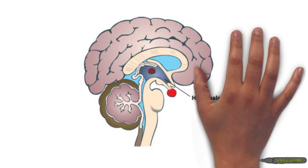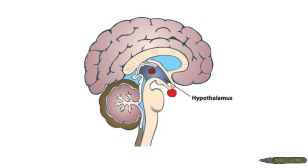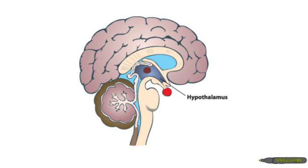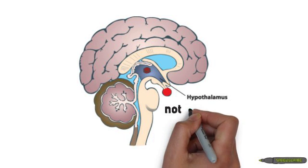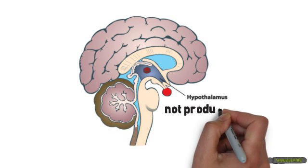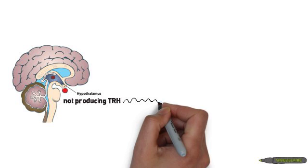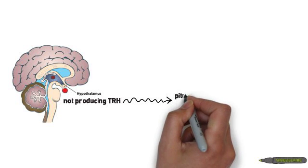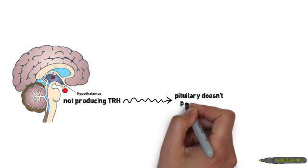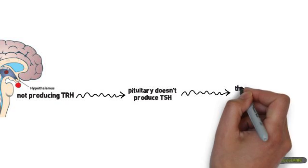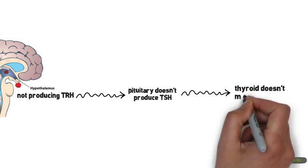The term tertiary refers to disease of the gland that controls the gland that controls the primary gland. For example, tertiary hypothyroidism means the hypothalamus is diseased and not producing TRH to stimulate the pituitary to release TSH to stimulate the thyroid to make thyroxin.